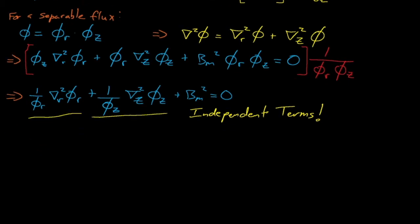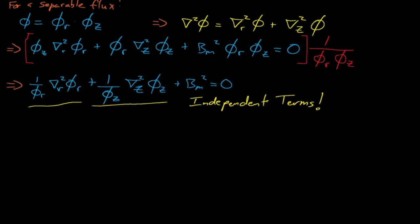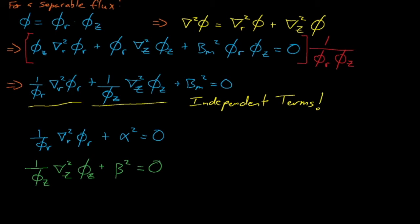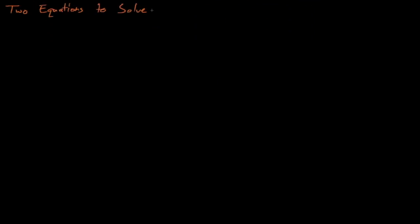The only way that these two terms could add up to a constant material buckling is if they satisfy their own differential equations with two separate constants, alpha and beta, where alpha squared plus beta squared equals the material buckling. And so, we're left with two independent differential equations to solve.